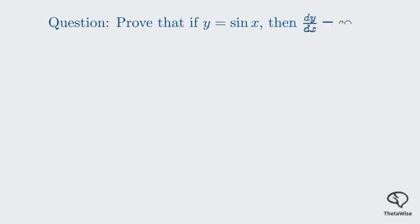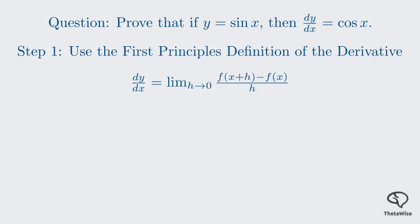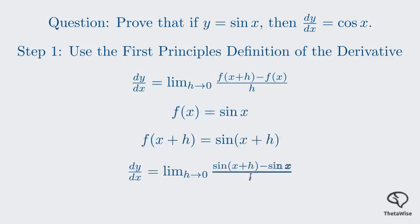We'll begin with the first method. The question asks us to prove that if y equals sine x, then its derivative is cosine x. Our first task is to apply the definition of the derivative. The derivative is defined as the limit as h approaches 0 of f(x+h) minus f(x), all divided by h. This is the first principles definition. In our case, our function f(x) is sine x, so we substitute sine x into our formula. This gives us the limit as h approaches 0 of sine(x+h) minus sine x all over h.